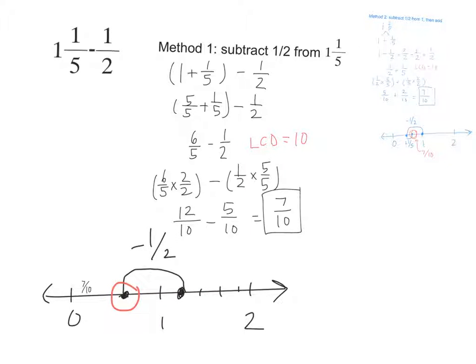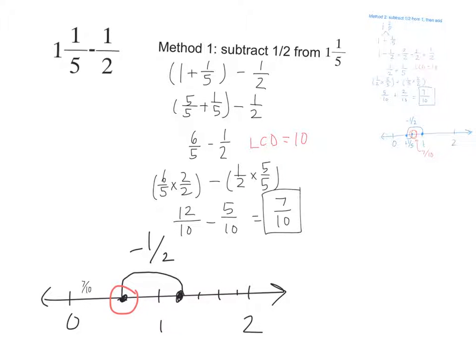If I were to represent what I'm doing on a number line, I would look at this number line. Here I have 1 and 1 fifth as my starting point. And I'm going to subtract 1 half and I end up at 7 tenths. What questions do you have about method 1?